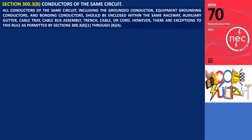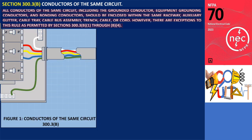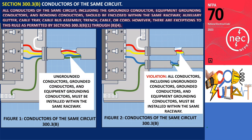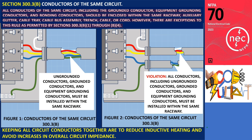Moving on to Section 300.3b, it states that all conductors of the same circuit, including the neutral and equipment grounding conductors, must be run in the same raceway, conduit body, auxiliary gutter, cable tray, cable bus assembly, trench, cable, or cord unless otherwise permitted in accordance with 300.3b1 through b4. Figure 1 serves as an example that complies with these rules, while Figure 2 represents an installation that violates Section 300.3b. The main reasons for keeping all circuit conductors together are to reduce inductive heating and avoid increases in overall circuit impedance.